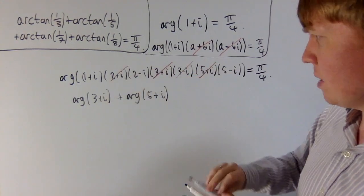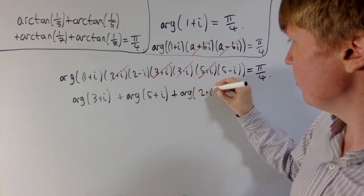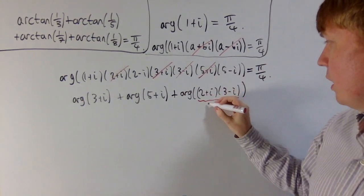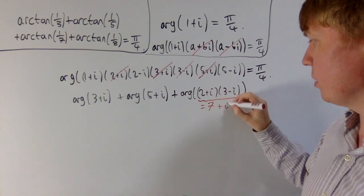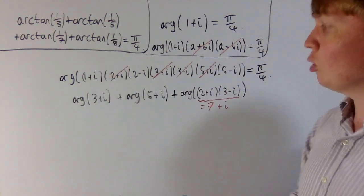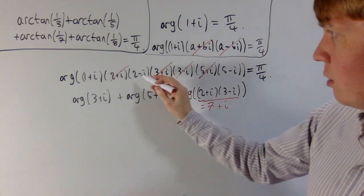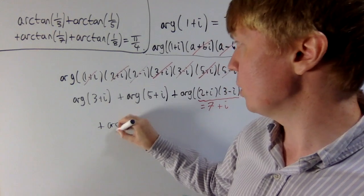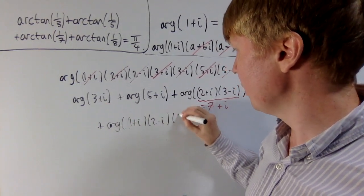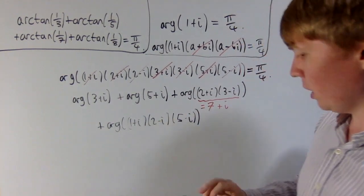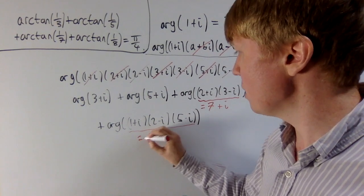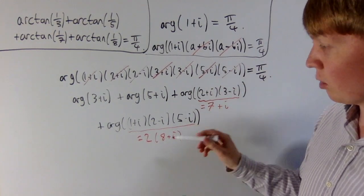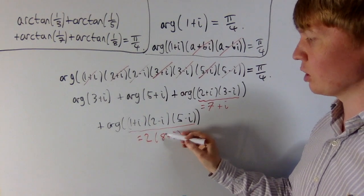For the next piece, we combine more than one factor: taking (two plus i) times (three minus i), which turns out to equal seven plus i — particularly nice because it gives a contribution of arctan one-seventh. Then the remaining terms — (one plus i), (two minus i), and (five minus i) — when multiplied together equal two times (eight plus i). The factor of two doesn't affect the argument, so the argument is arctan of one-eighth, the same as the argument of eight plus i.